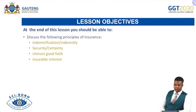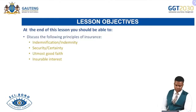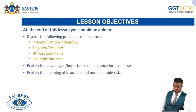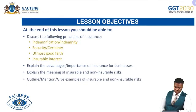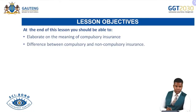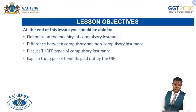We will discuss the following principles of insurance: utmost good faith and insurable interest. We will explain the advantages or importance of insurance for businesses, explain the meaning of insurable and non-insurable risks, give examples of each, then proceed to compulsory insurance — elaborating on its meaning, differentiating between compulsory and non-compulsory insurance, and discussing three types of compulsory insurance including UIF, the Unemployment Insurance Fund.